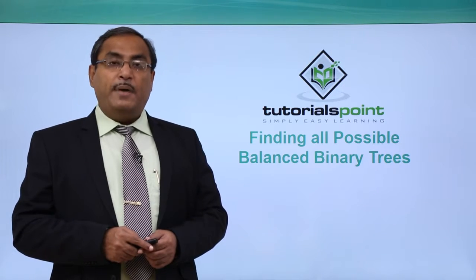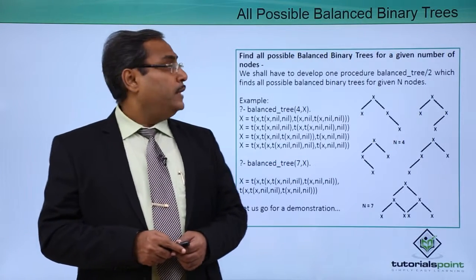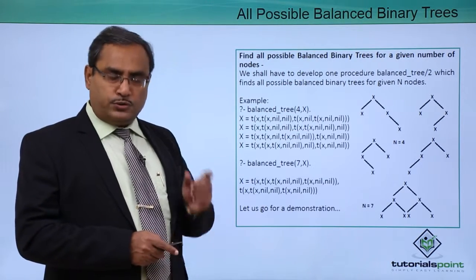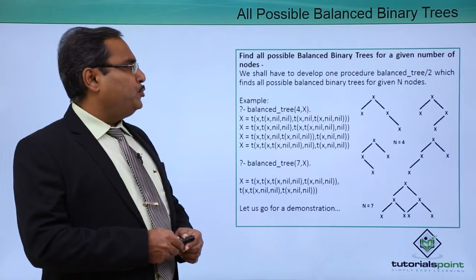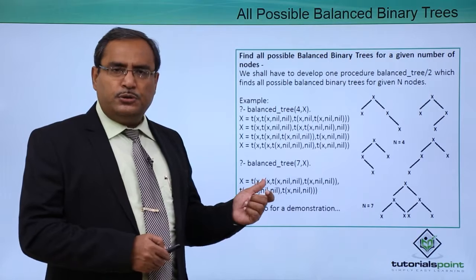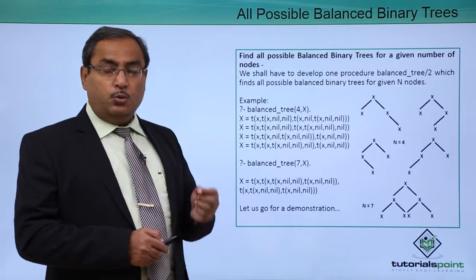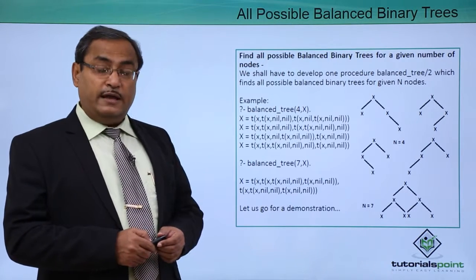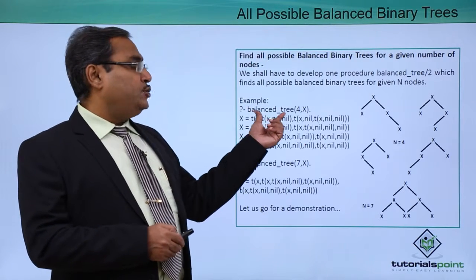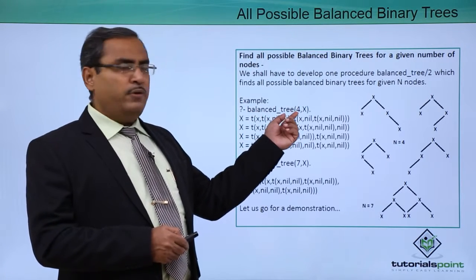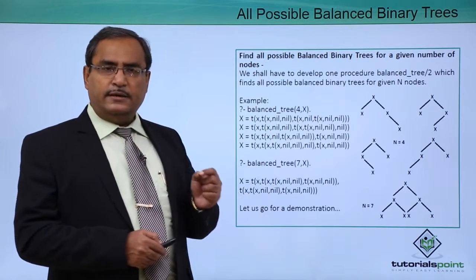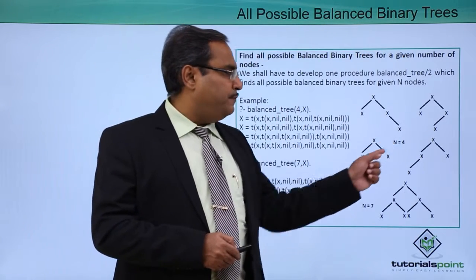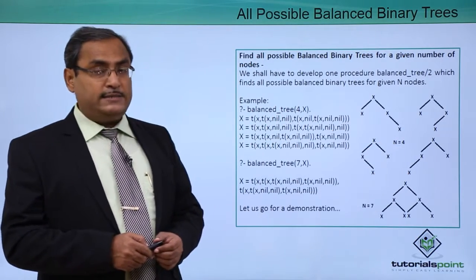Finding all possible balanced binary trees. We shall develop a procedure named 'balanced_tree' which takes two arguments and finds all possible balanced binary trees for a given number of nodes. With 4 number of nodes, we can have 4 distinct balanced binary trees as output of this respective goal.